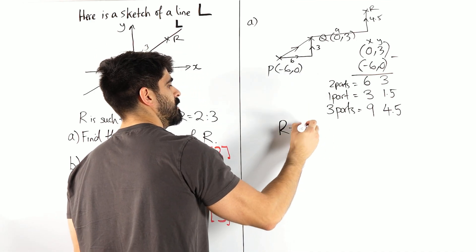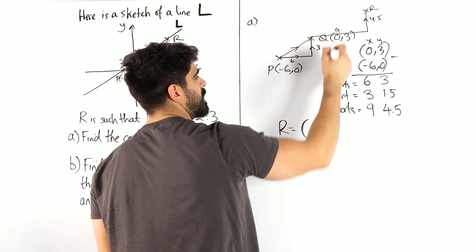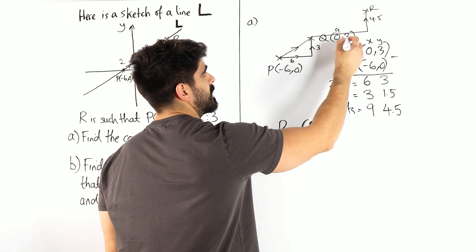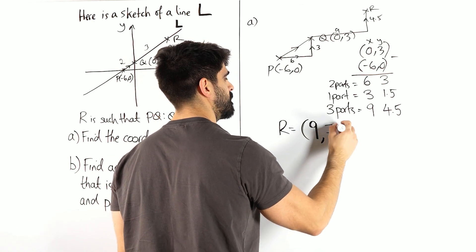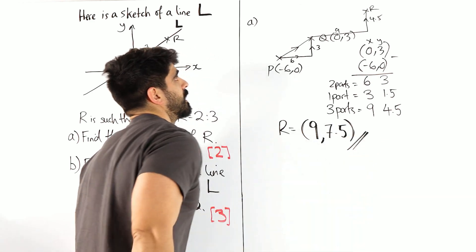And that's going to take you to R. So R is, you're at 0, we're going 9 across, so 9 plus 0 is 9. Then at 3 we're going up 4.5, so 3 plus 4.5 is 7.5. And that's your answer.